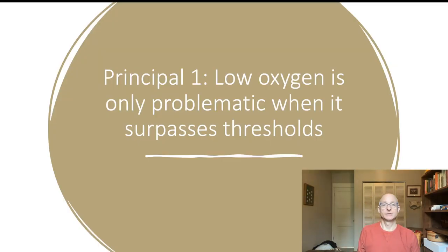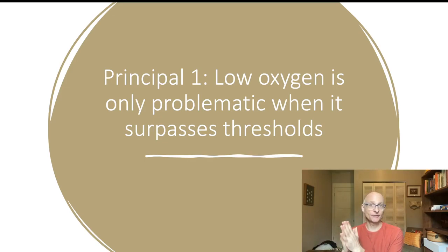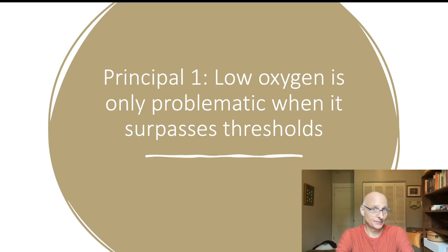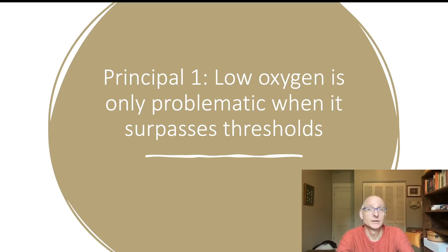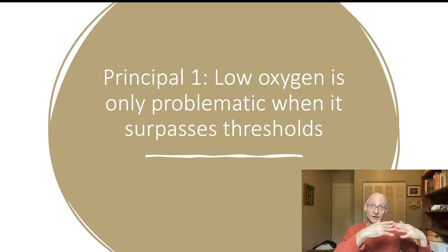Principle one is that low oxygen is only problematic when the oxygen level surpasses some threshold. Those thresholds vary a lot by species. Take humans as an example: say you're watching this video in your home or office, where there's plenty of oxygen — far more than you actually need. If there's a 10% reduction — maybe your room gets really crowded and people breathing heavily lower the oxygen level — you're probably not even going to notice that 10% reduction.